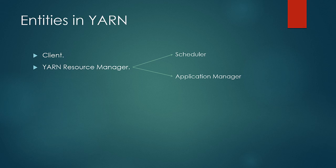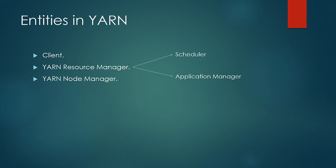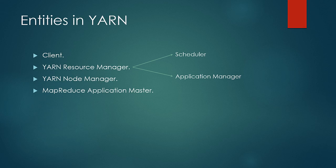Another portion of the resource manager is the application manager, which monitors the application statuses. Third is the node manager, present on all the slave nodes and responsible for launching and managing containers. Fourth is the application master — note that the two portions of the resource manager are the scheduler and application manager; the application master is a completely different entity. The application master is responsible for carrying out execution of the job it is associated with, coordinating task running, monitoring progress, aggregating it, and sending reports to its client.